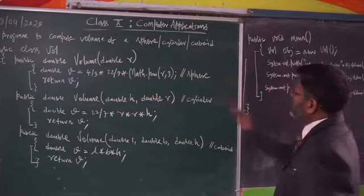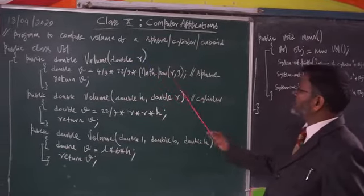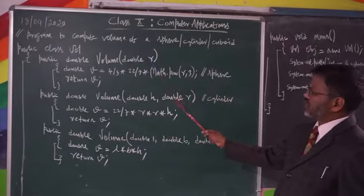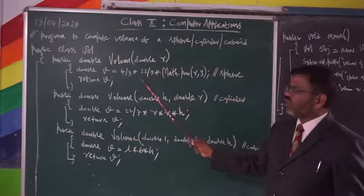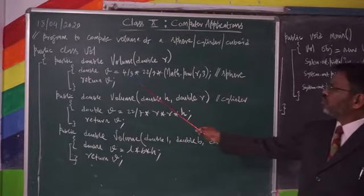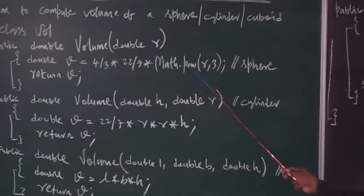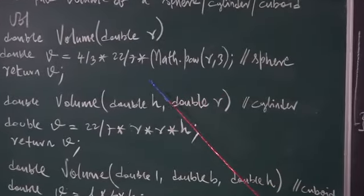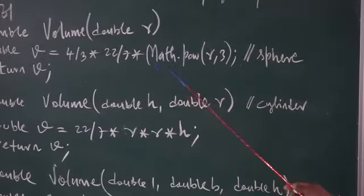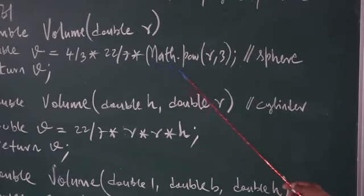With one parameter, what is the value? It is 9.6. What is the radius of your sphere? 9.6. Volume of your sphere is what? 4 by 3, pi r squared. 4 by 3, what is the pi value? 22 by 7. Instead of writing r into r into r thrice, I am using a built-in function called Math.pow.